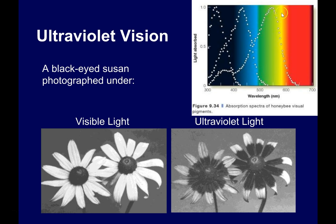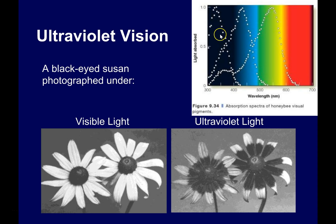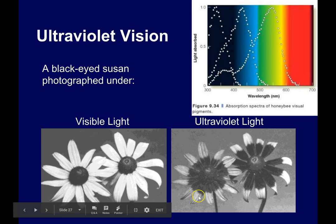You can see that honeybees can perceive part of the visible spectrum that we can perceive as well. But they can also perceive quite a bit of electromagnetic energy down into the ultraviolet part of the spectrum, right down between 300 and 400 nanometers. So they're perceiving shorter wavelengths of light that we can't and potentially extracting information from the environment that we can't.